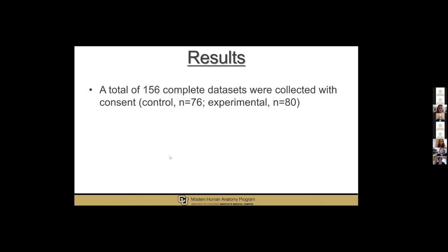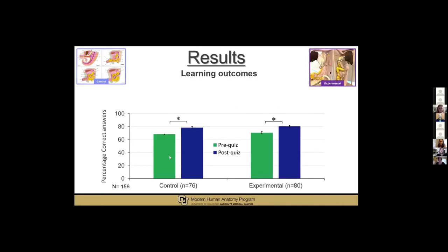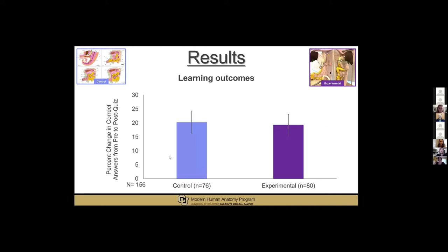As a result, a total of 156 completed datasets were collected with consent — 76 for the control and 80 for the experimental group — as the students had the option to exclude their data from the study. Our learning outcomes showed that both control and experimental groups' post-quiz performance was significantly improved after interacting with their assigned resource, with an effect size of 0.27. The percentage change in correct answers from pre-quiz to post-quiz between both groups was not significantly different, suggesting that learning occurred regardless of the resource type.